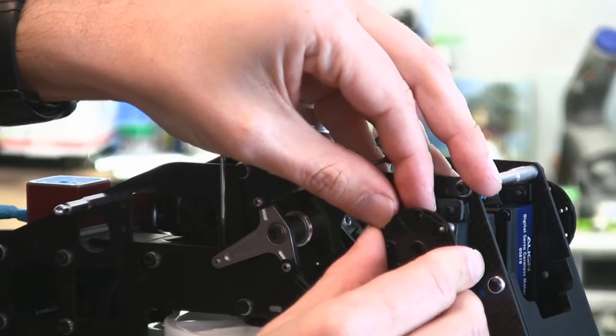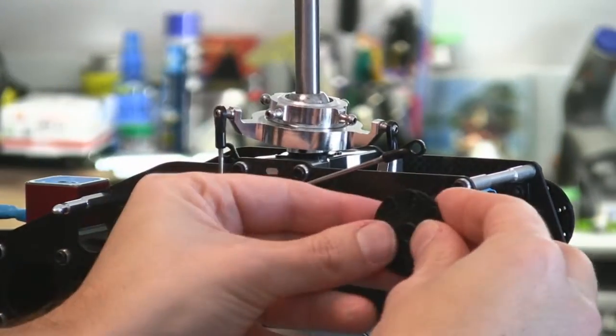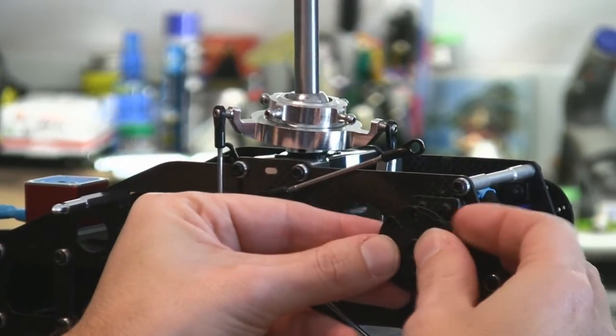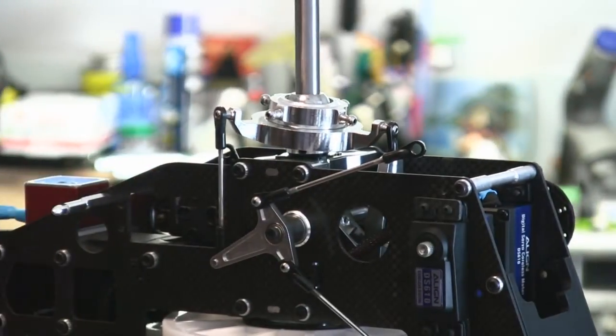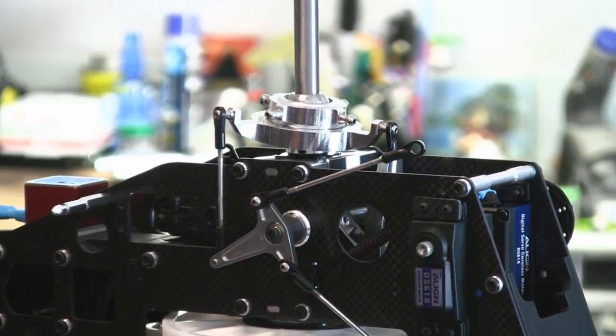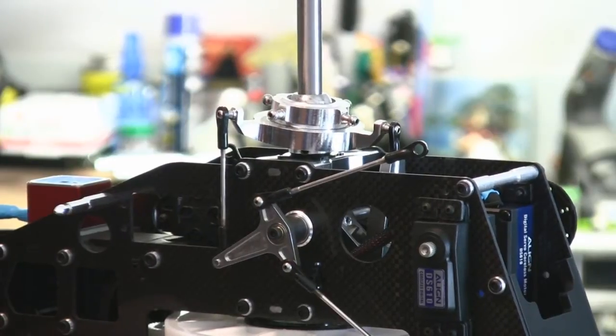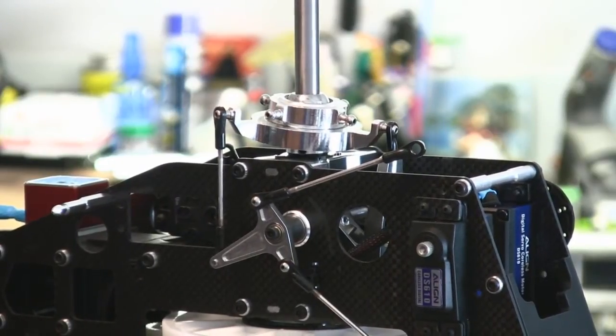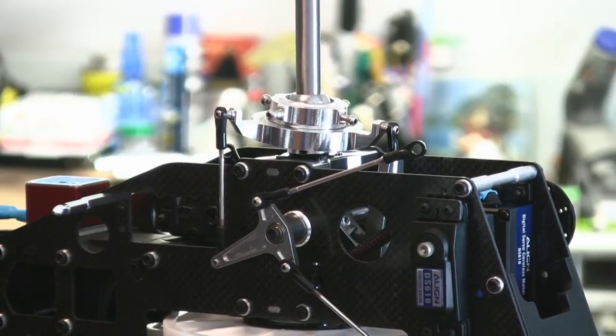And you know how the splines never line up with the servo arm so I'm going to rotate the servo horn around as many times as it takes. Actually, what I should be doing is I should be doing this with it powered on so the servo doesn't move. So I'm just going to switch everything back on again.